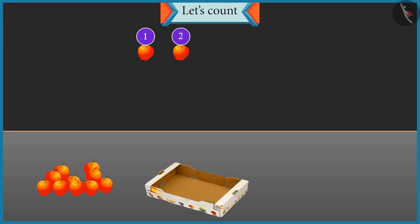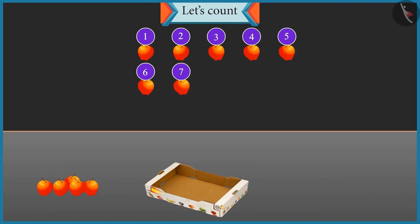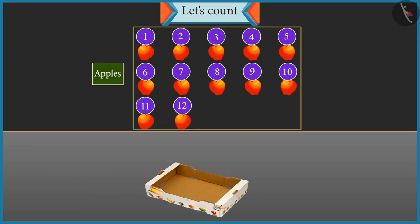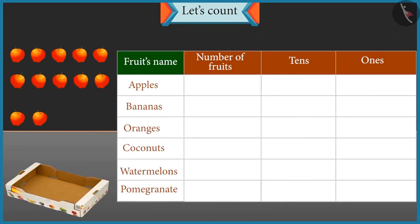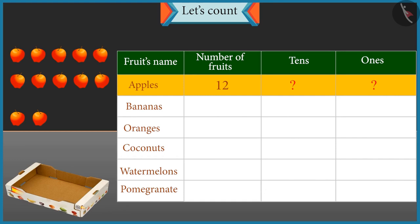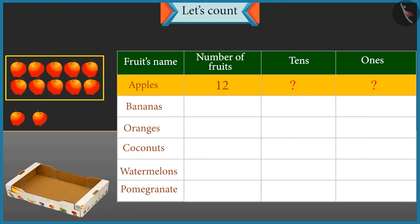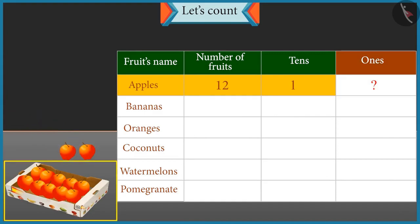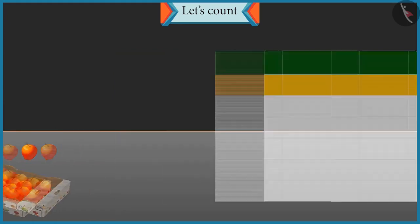One, two, three, four, five, six, seven, eight, nine, ten, eleven and twelve. There are twelve apples. Well done. Apples: twelve. Now tell me, how many tens and ones are there in twelve? One group of ten will be formed and two apples will be left. So there is one tens and two ones. Well done.